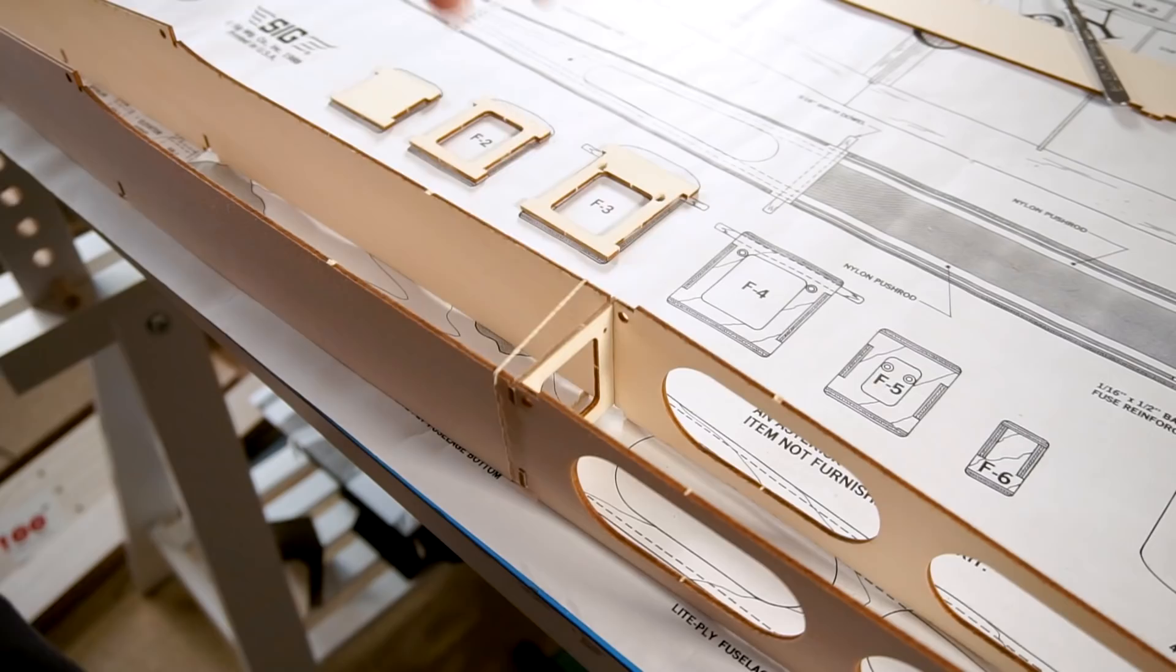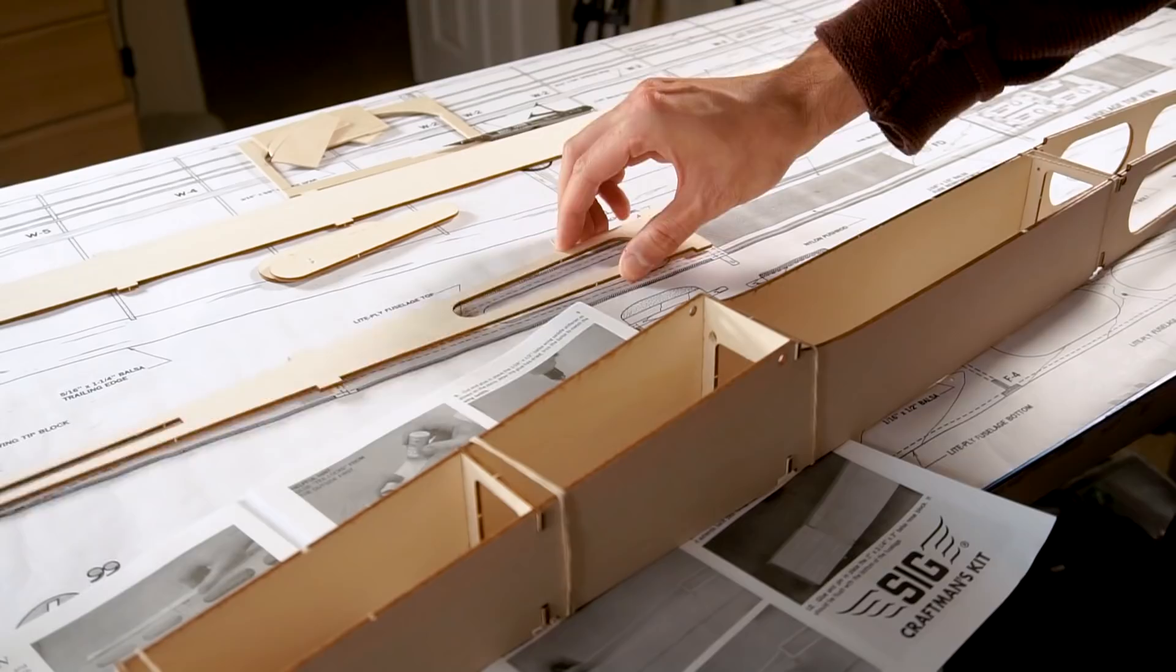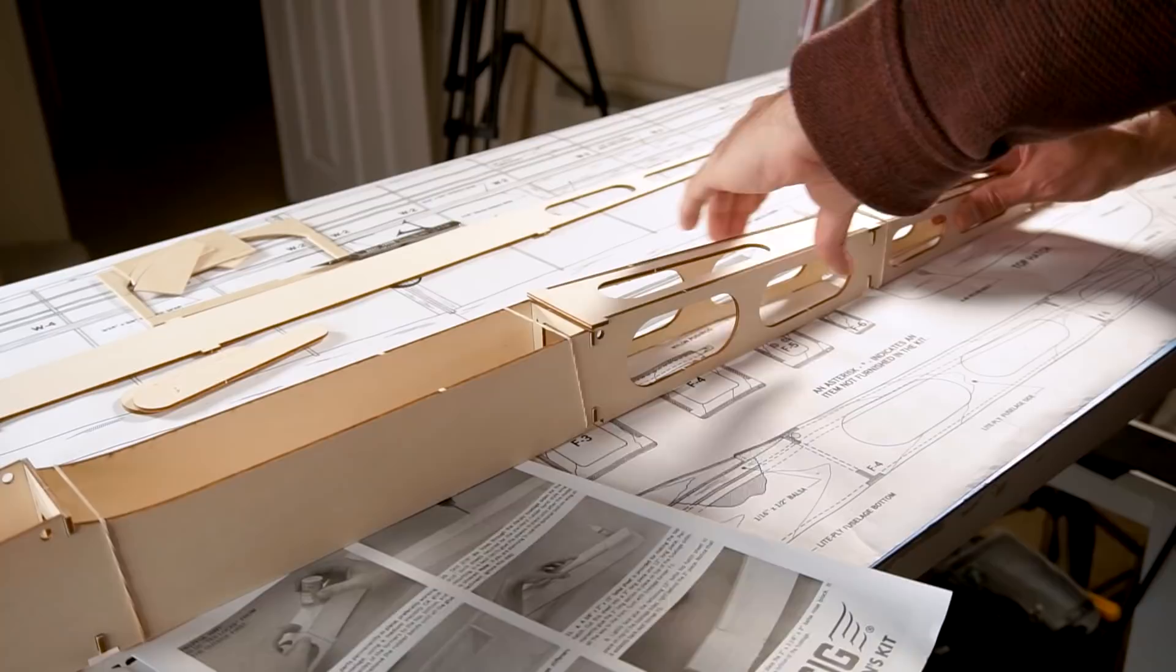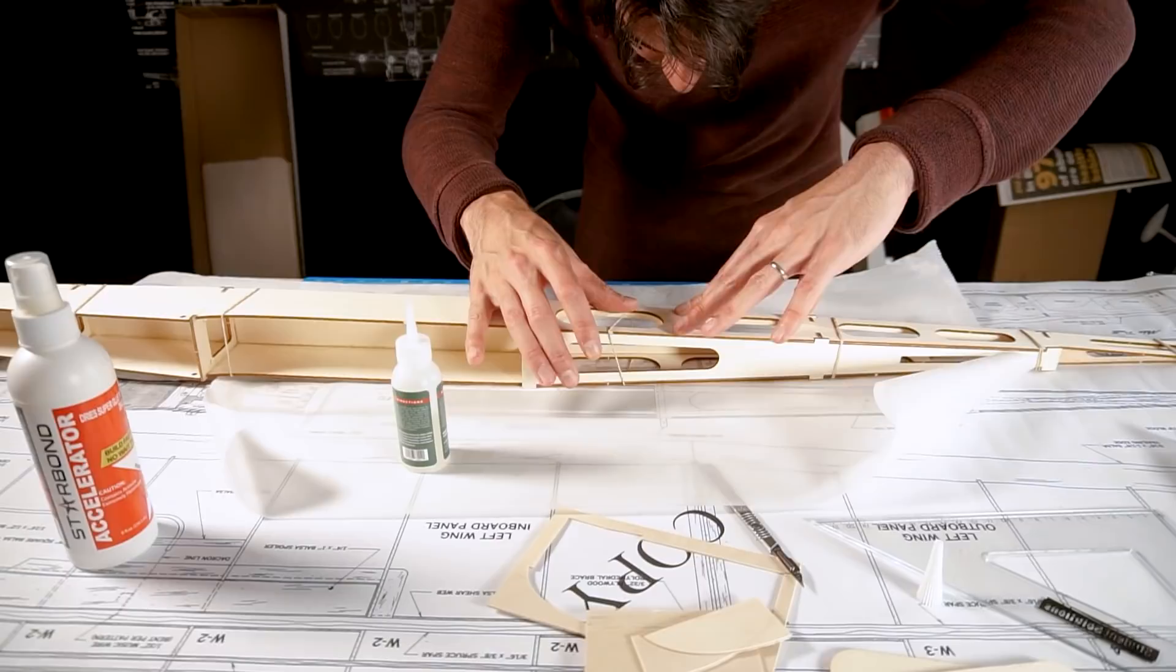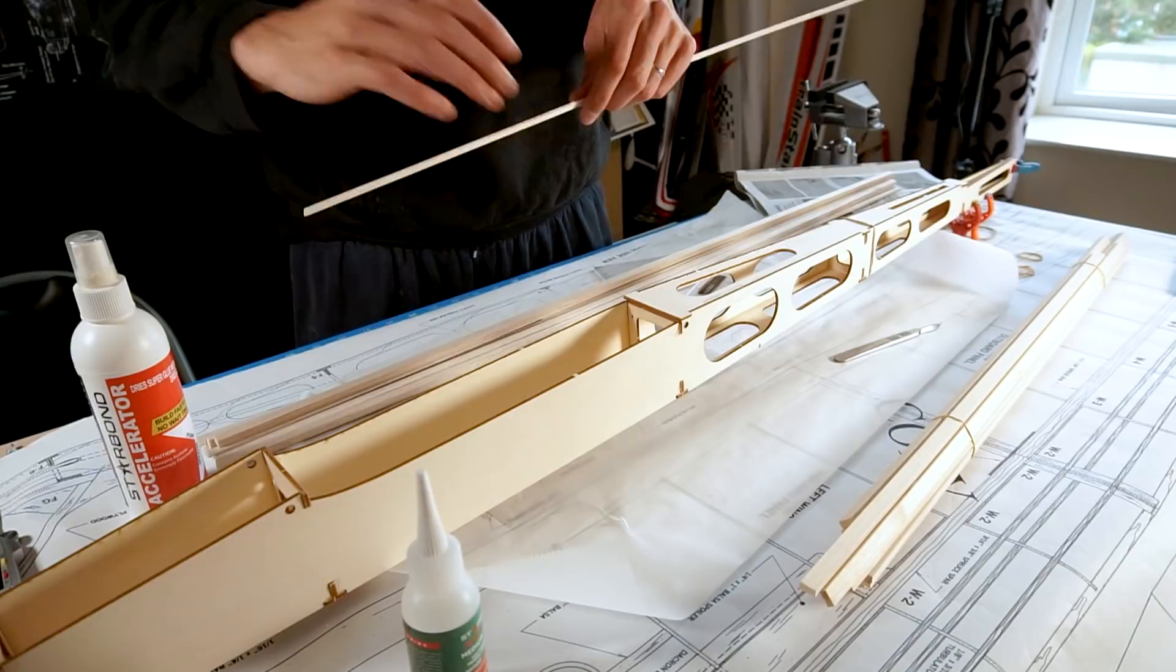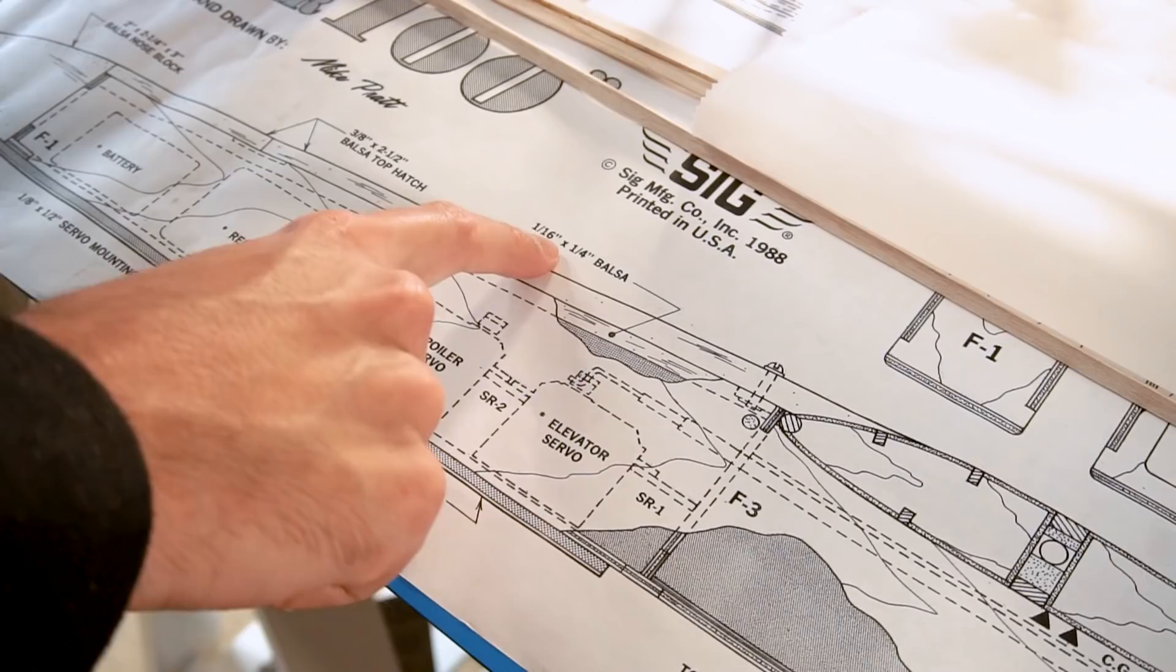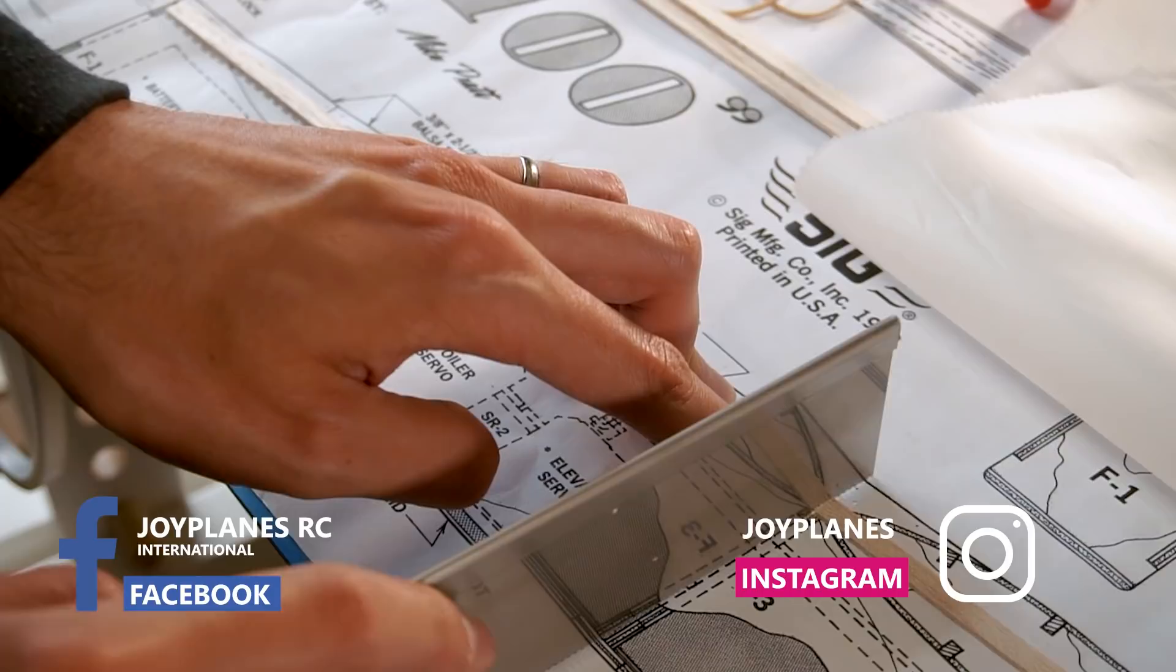As you can see, I'm putting the formers in place, putting the fuselage together, and applying CA glue with a kicker or accelerator to make it harden faster. Following the instructions, I start putting the balsa reinforcements, measuring each strip carefully because there are many strips of different sizes for different parts.